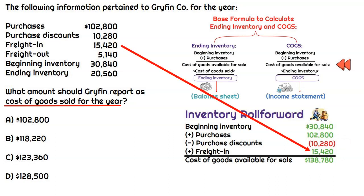Then freight in would also be part of an inventoryable cost. We have to get the inventory from our vendor to our warehouse, and that's an inventoryable cost. So we're going to add in freight in of $15,420, and that gets us to cost of goods available for sale of $138,780.